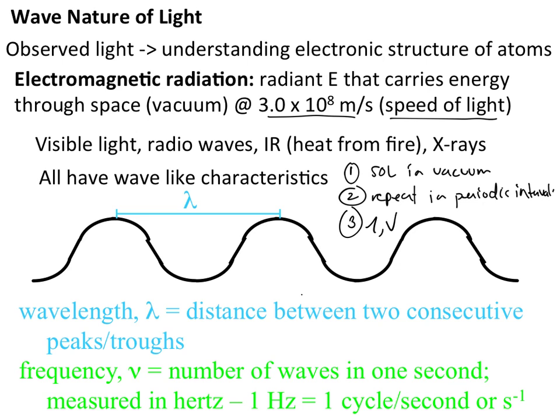Wavelength is described as the distance between two consecutive peaks or troughs. This would be considered a peak on this wave, this would be another peak. The distance between those two would be the wavelength, and wavelength is represented by lambda (λ).